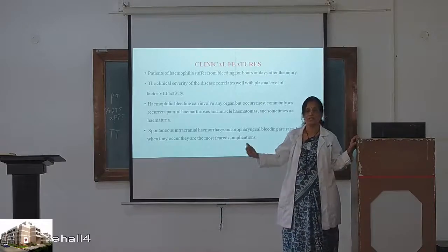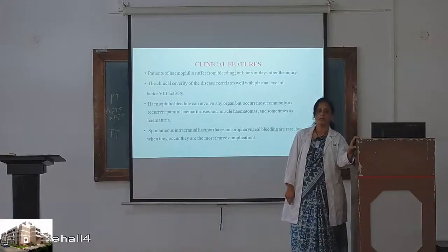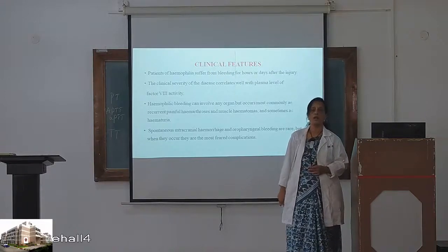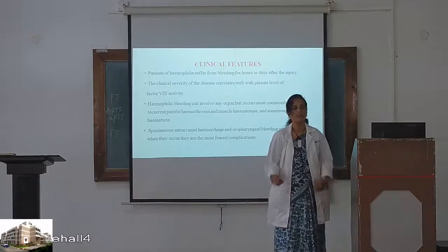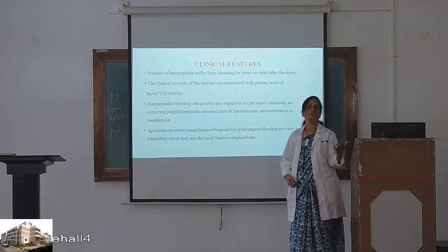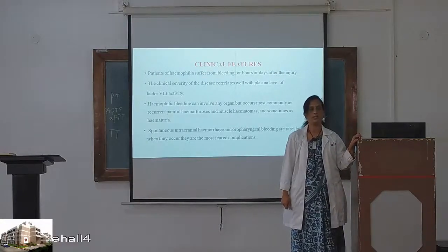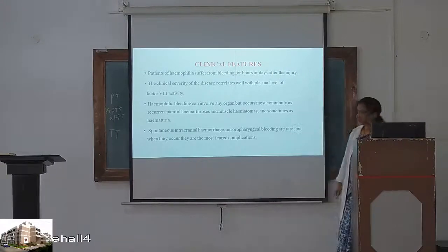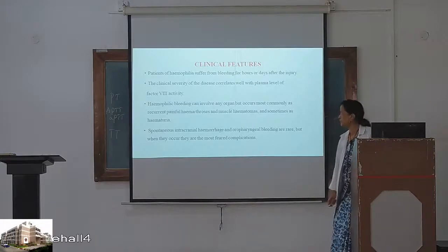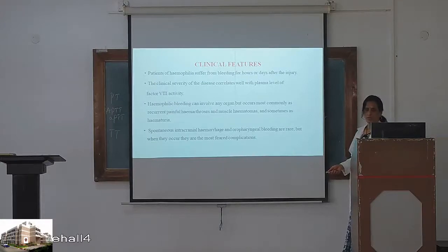Hemophilic bleeding can involve any organ but occurs commonly as recurrent painful hemarthrosis — joint bleeding — hematomas, hematuria — passing blood in the urine — and spontaneous intracranial bleeding. The laboratory findings: clotting time is prolonged, prothrombin time is normal because factor VIII belongs to the intrinsic pathway not extrinsic, while APTT is prolonged. Factor assay shows factor levels are lowered.